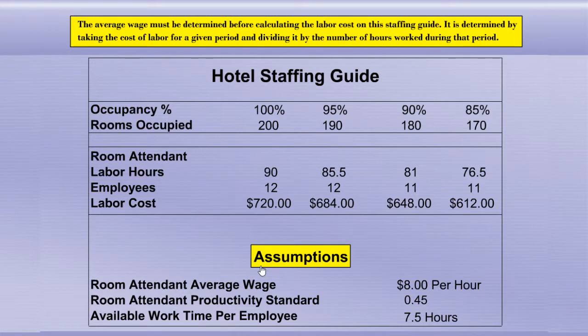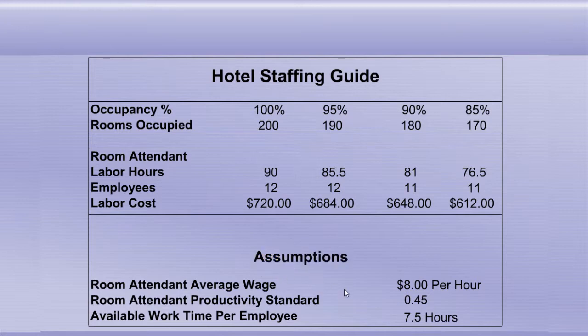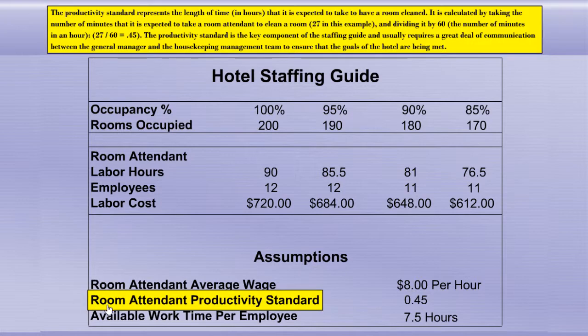The average wage must be determined before calculating the labor cost on this staffing guide. It is determined by taking the cost of labor for a given period and dividing it by the number of hours worked during that period. For this example, the average wage is $8 per hour.